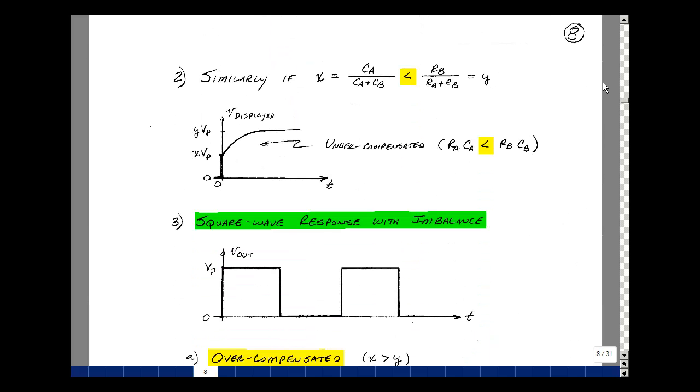Now, if we take the same condition, but now make the capacitive voltage divider less than the resistive voltage divider, we still get the same result, just that this value here is smaller than this. This will stay the same. Now this will be the same because we've got the same resistive voltage divider.